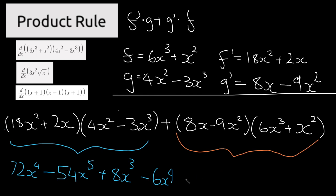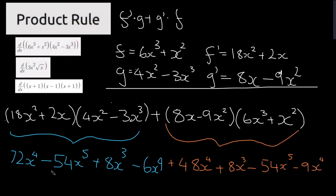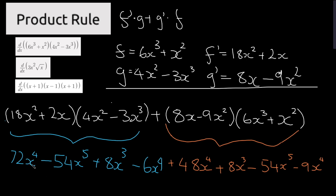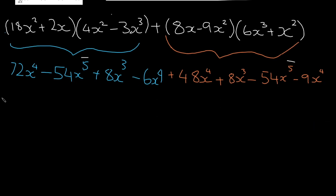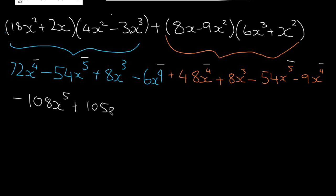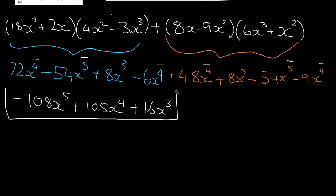Then expanding the second bracket: 48x to the power of 4, plus 8x to the power of 3, minus 54x to the power of 5, minus 9x to the power of 4. Now we add or subtract terms with the same exponent. The highest exponent is 5: negative 54 and negative 54 gives negative 108x to the power of 5. For the 4s: 72 − 6 + 48 − 9 gives 105x to the power of 4. For the 3s: 8 plus 8 gives plus 16x to the power of 3. Final solution: negative 108x⁵ + 105x⁴ + 16x³.